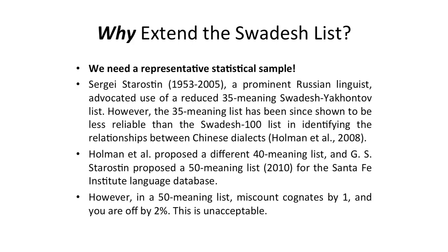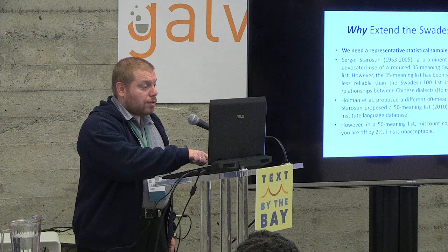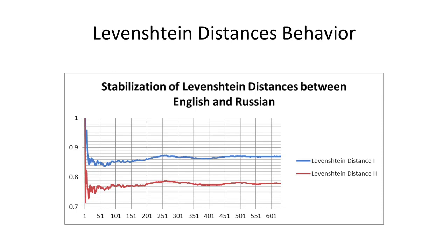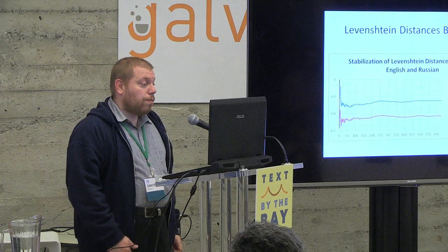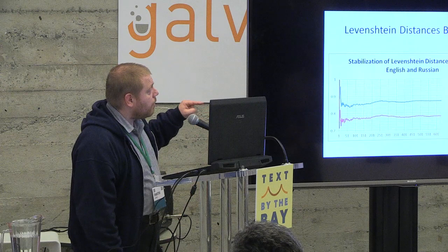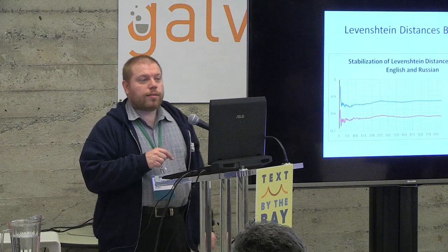For statistical purposes, to get a representative statistical sample, we want to extend the Swadish list. This graph shows how the Levenshtein distance stabilizes in an extended Swadish list, extended to 620-plus meanings from 100 or 200 meanings. That is the main point behind extending the Swadish list: the Levenshtein distances will stabilize, and that may matter when the differences between distances are at stake. Thank you very much.